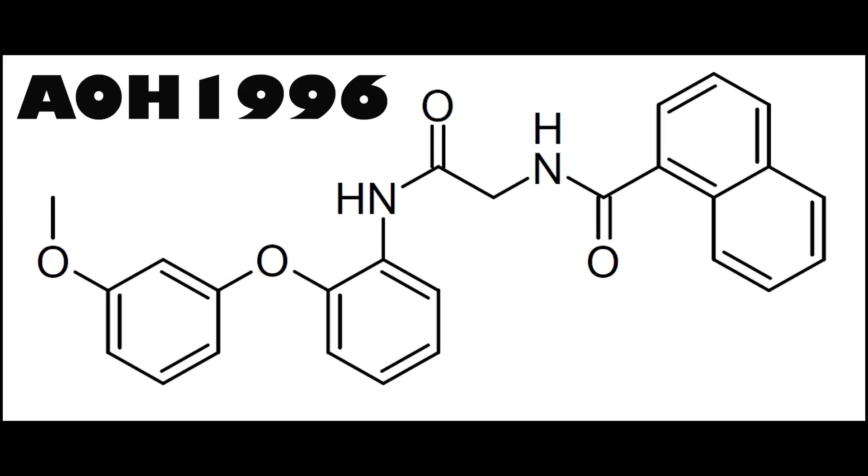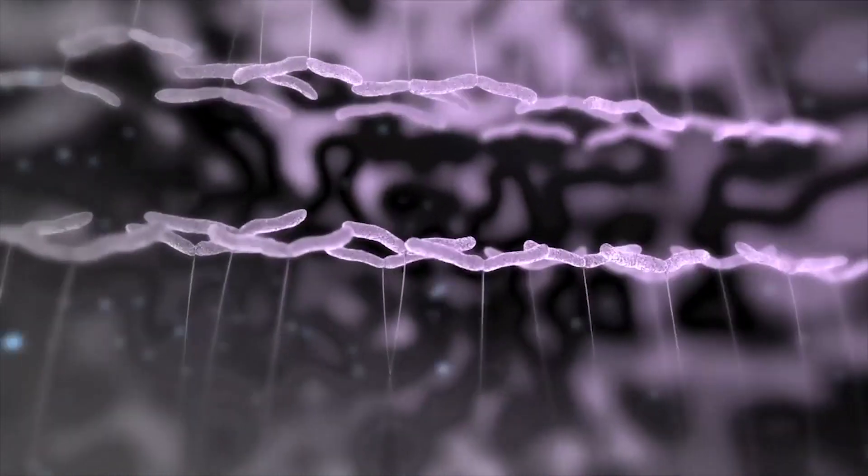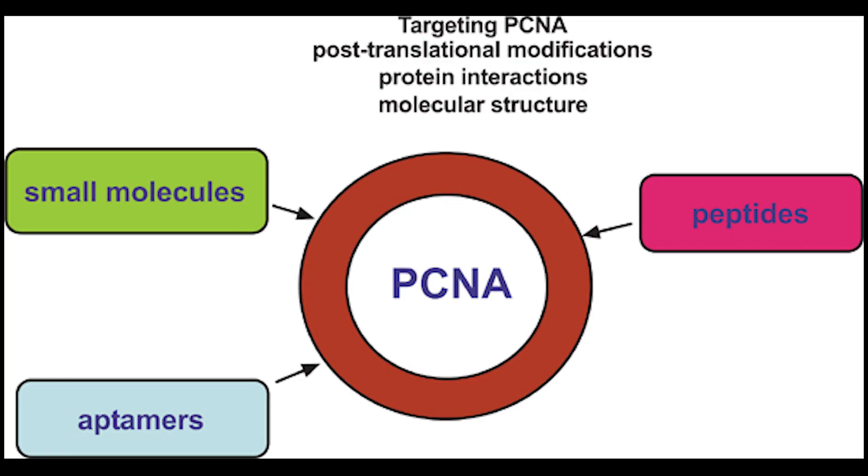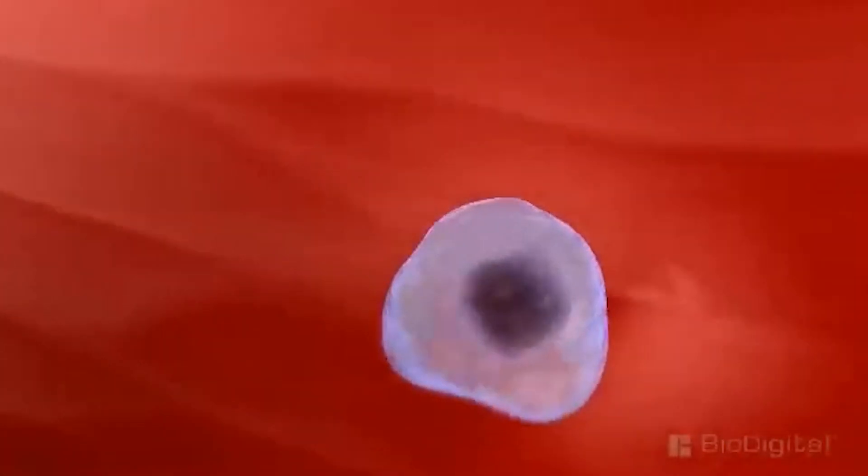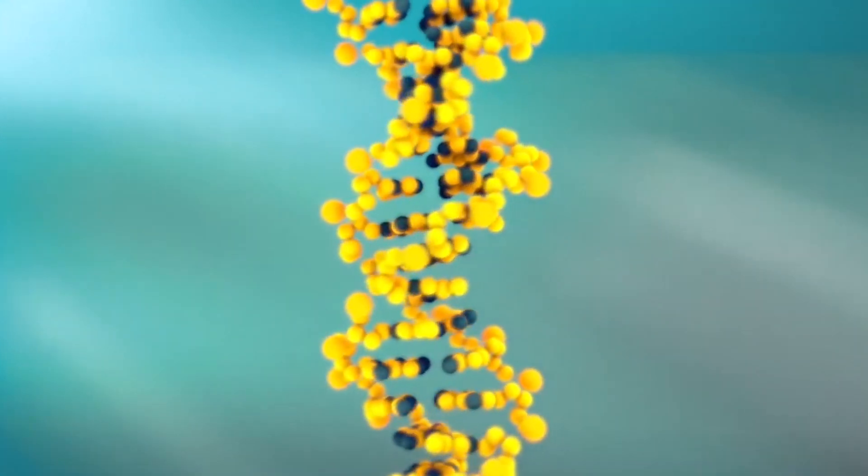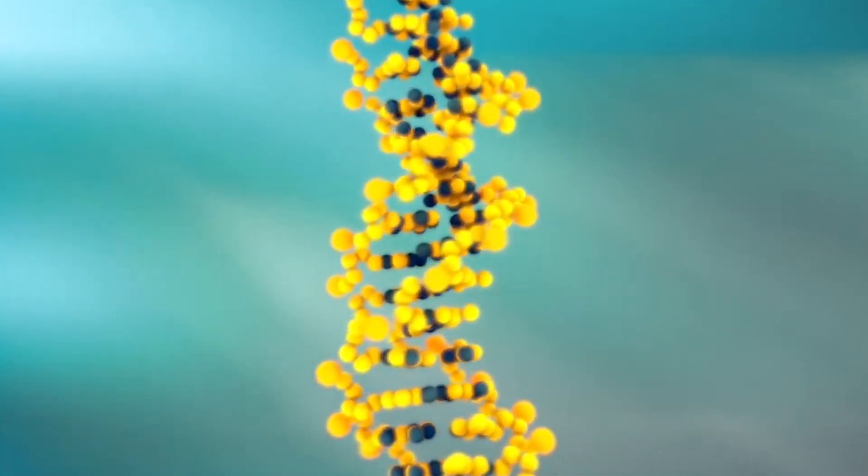Known as AOH 1996, this innovative drug targets a cancerous variant of a protein called proliferating cell nuclear antigen, or PCNA. In its mutated state, PCNA plays a critical role in the replication of DNA and the repair of rapidly dividing tumors.